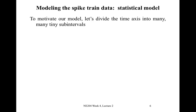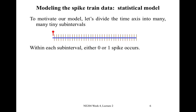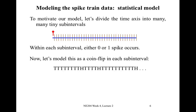To develop our statistical model, let's start by dividing our time axis into many tiny sub-intervals. Here we've drawn the time axis in blue and divided it into these many tiny sub-intervals. We have this stimulus — the red symbol — and within each sub-interval either one spike occurs or no spikes occur. We modeled this as a coin flip: in each sub-interval we flip our coin and get either tails (T) or heads (H), where H represents a spike.